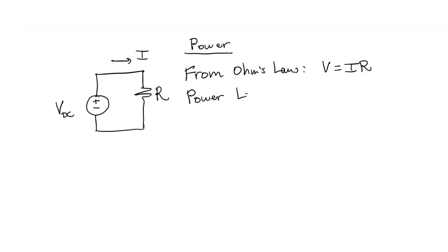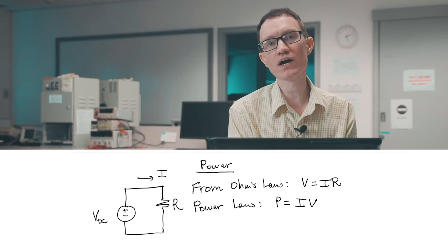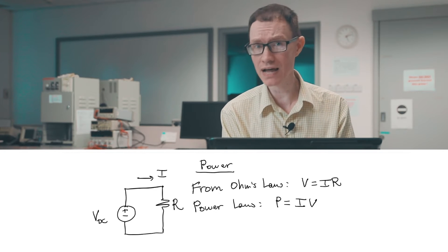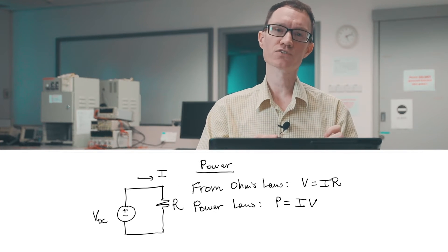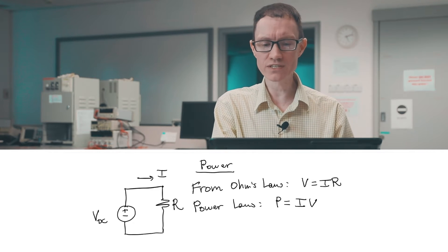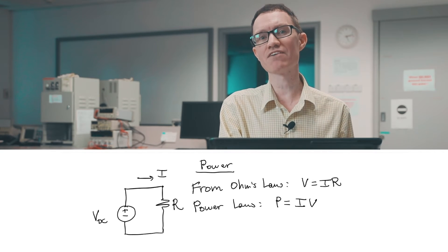The power law in a resistor tells us that the power consumed is related to IV. And for a DC voltage source, the same equation tells us the power supplied. It's very important to remember that there's a distinction between the two. Although the same equation, P equals IV,